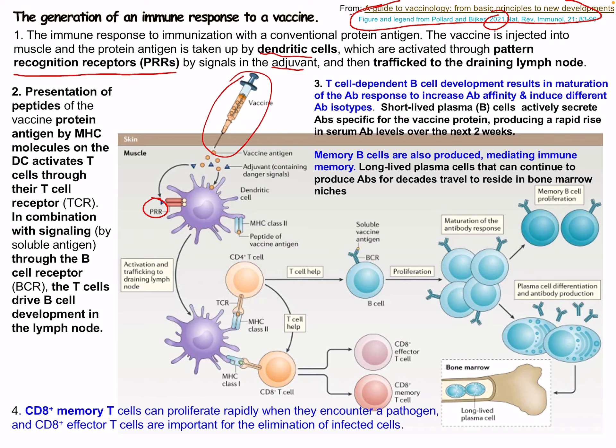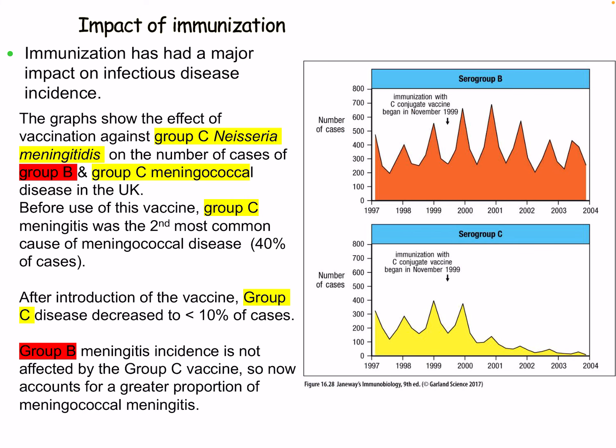Memory cells are produced to mediate long-term memory. These long-lived plasma cells continue to produce antibodies for decades and travel to reside in bone marrow niches where they are stored. Finally, CD8 memory T cells can proliferate rapidly when they encounter a pathogen, and CD8 effector T cells are important for elimination of infected host cells when we encounter that pathogen again.